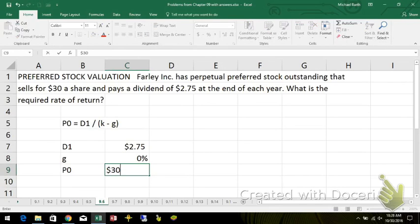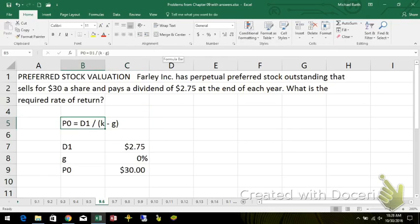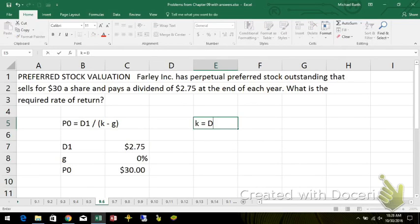Alright, so the other variation where we rearrange the arithmetic and move it around, we can get total rate of return equals the dividend yield, D1 over P0, plus the long-term growth rate portion.